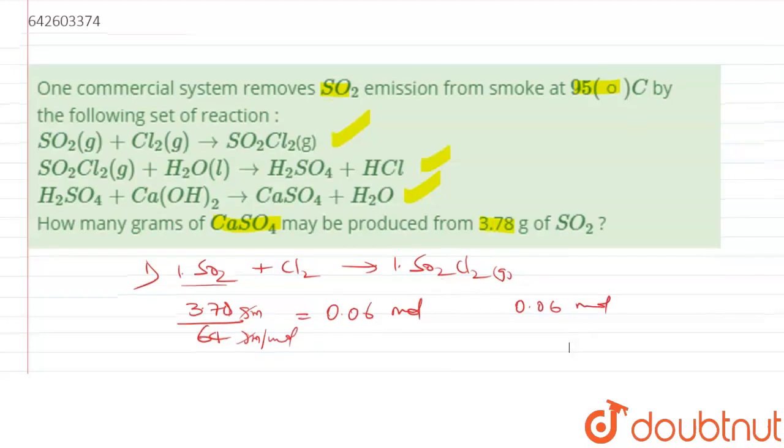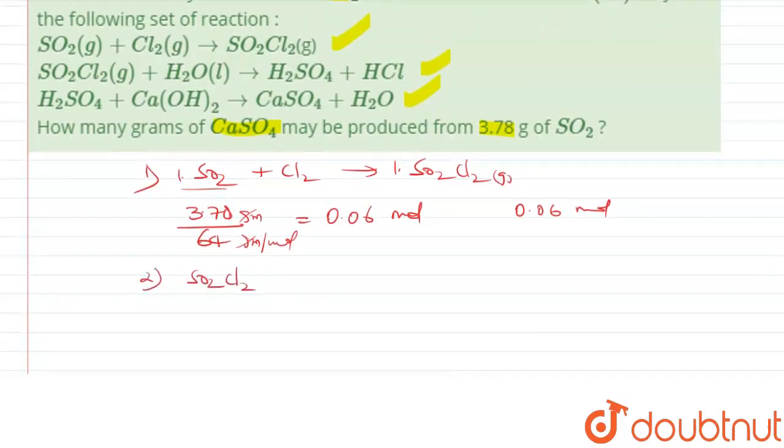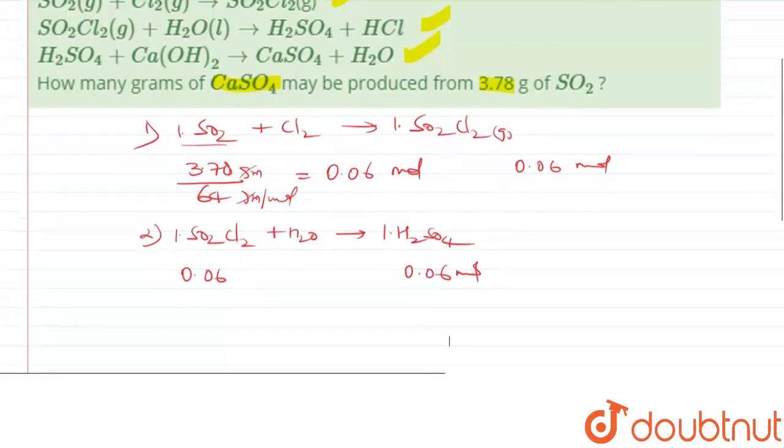In the next step, SO2Cl2 and H2O is producing H2SO4. So if this is 0.06, and this one mole is producing one mole, so this will also be 0.06 mole. And in the final step,